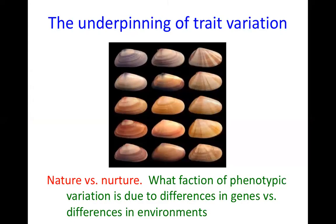Quantitative Genetics is the study of variation. One of the things it asks is what's the underpinning of trait variation — the classic nature versus nurture? What fraction of phenotypic variation is due to individuals having different genes versus having experienced different environments?